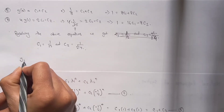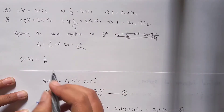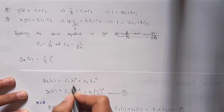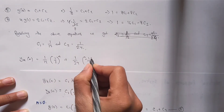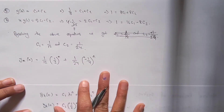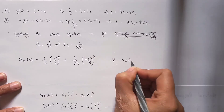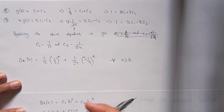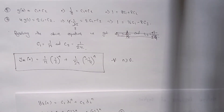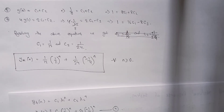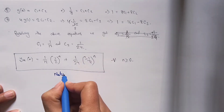Substituting C1 = 1/12 and C2 = 1/24 back into equation 4, the natural response is: y_n(n) = (1/12)·(1/2)^n + (1/24)·(−1/4)^n. Don't forget to state that this holds for all n ≥ 0, and always put your final result in a box in the examination — it gives a very good impression on the examiner.